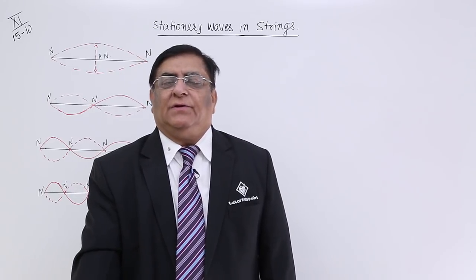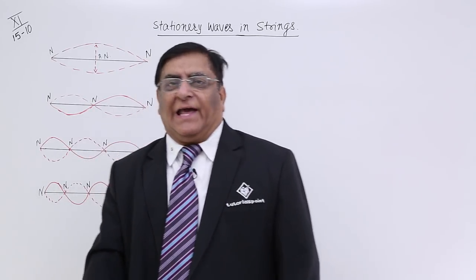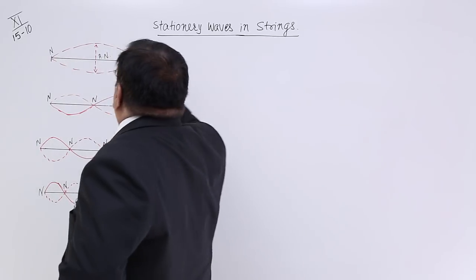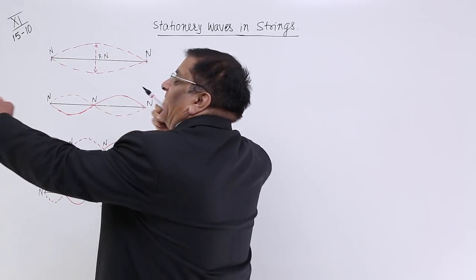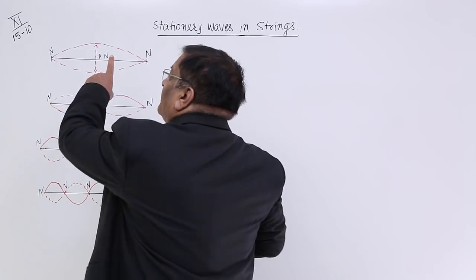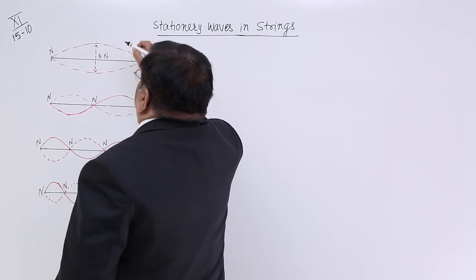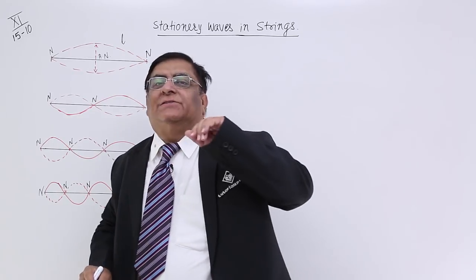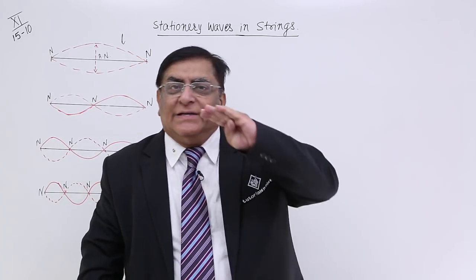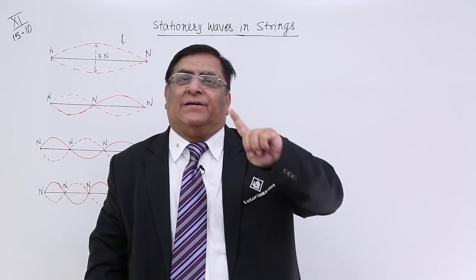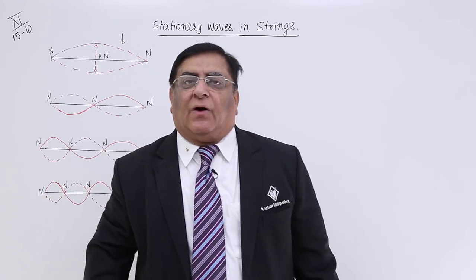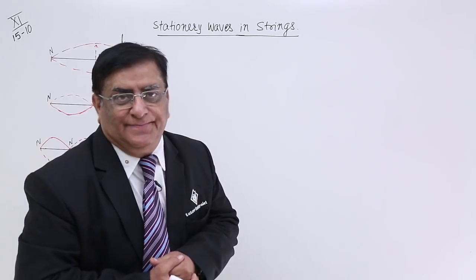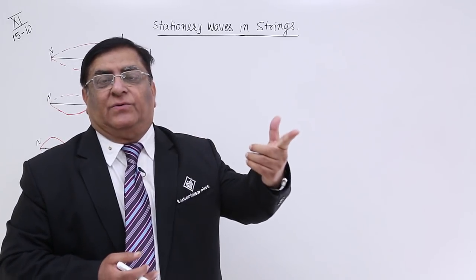There is a string of length L which is tied at both ends. Some tension is given to it, and then we pluck it. It has length equal to L. When we pluck it, it starts vibrating. When it starts vibrating, it has a certain frequency. When it is vibrating, it creates a sound.